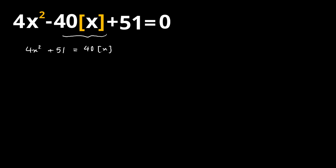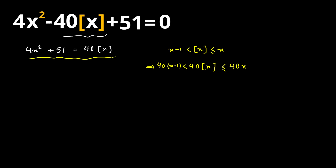Now there is something nice about floor of x based on its definition. Floor of x always lies between x minus 1 and x. Therefore, if I multiply everything by 40, I should have 40 times floor of x lies between 40 times x minus 1 and 40 times x. Since 40 times floor of x equals 4x squared plus 51, we can say that 4x squared plus 51 lies between 40x minus 40 and 40x.